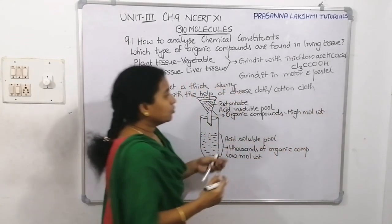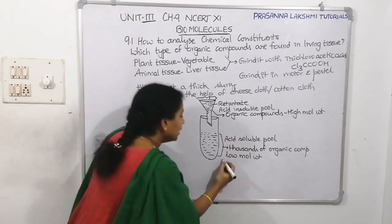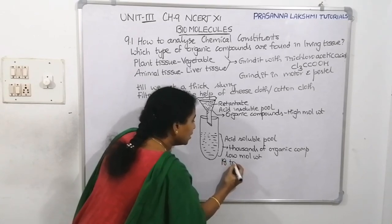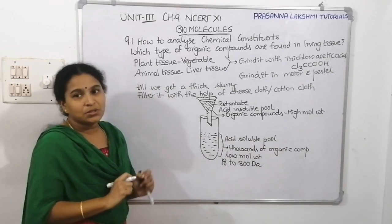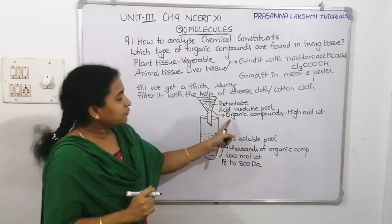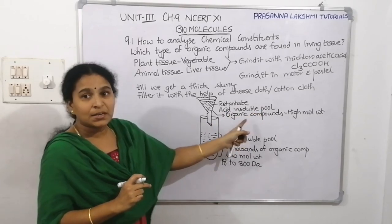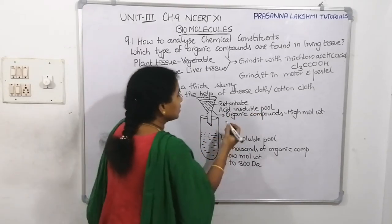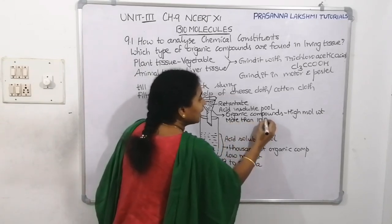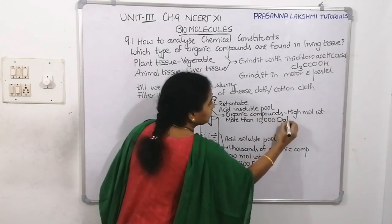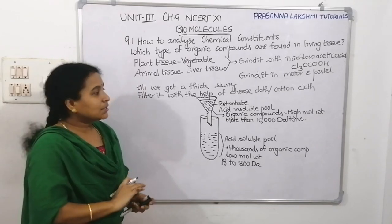What do we mean by low molecular weight and high molecular weight? Low molecular weight means the weight of the compound is in the range of 18 to 800 daltons — less than 1000 daltons — and these are found in the acid soluble pool. Whereas the molecular weight of organic compounds present in the acid insoluble pool is more than 10,000 daltons.